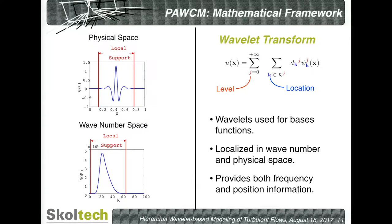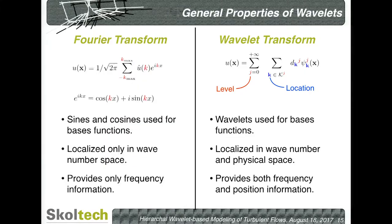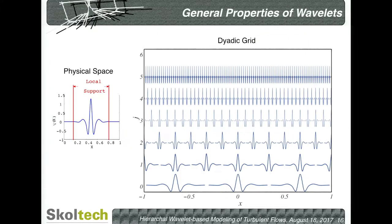If I have a wavelet coefficient that is large at location k and level j, that means something is happening there. This contrasts with the Fourier transform, where you completely lose locality of your information. Wavelets form bases by dilating and translating the original wavelet — you can see how this looks. The higher the scale, the smaller the wavelets are.